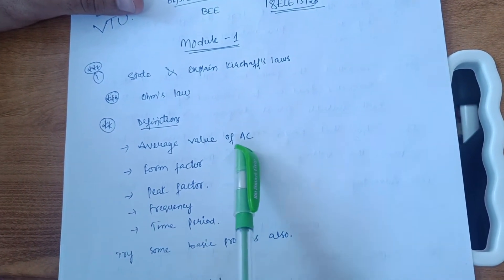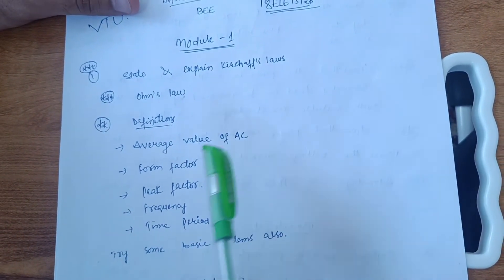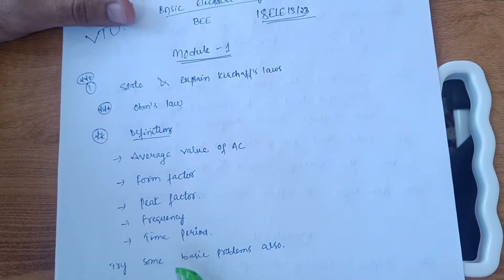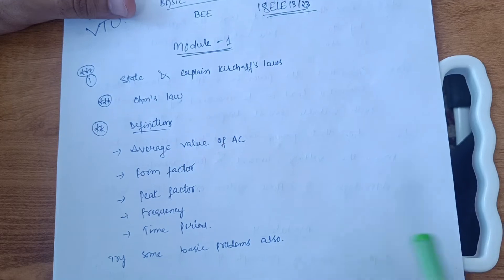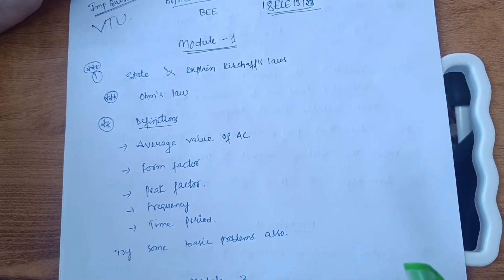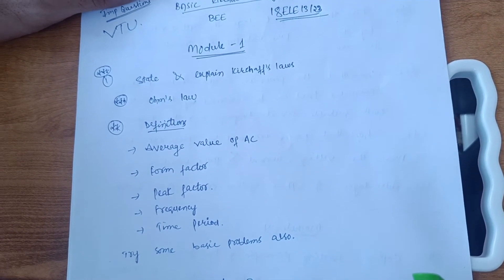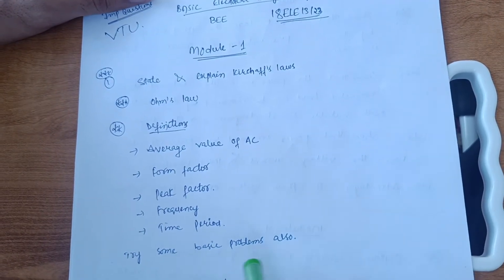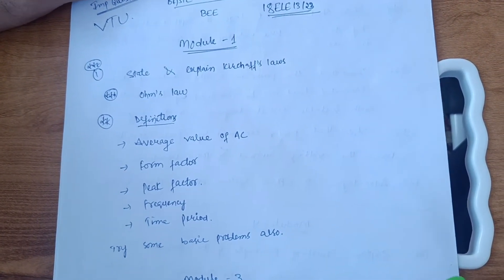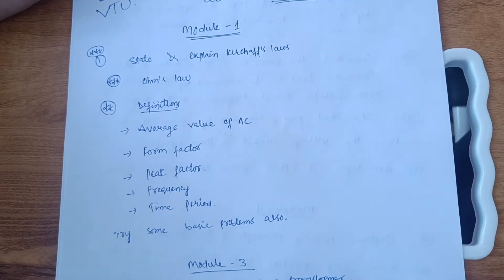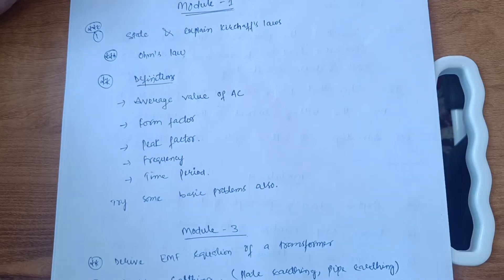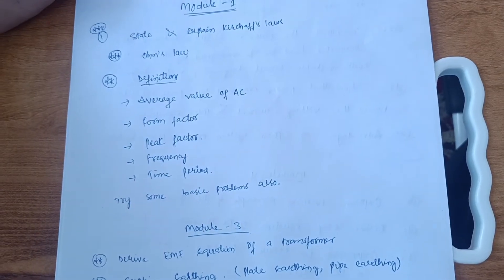Also, some definitions are important in Module 1: average value of alternating current (AC), form factor, peak factor, frequency, and time period. Go through the problems as well — these are simple concepts you already know from 12th class. You have to calculate resistance and current, so go through the problems too. It will then be easy for you to score 20 marks in Module 1. Don't skip the problems.